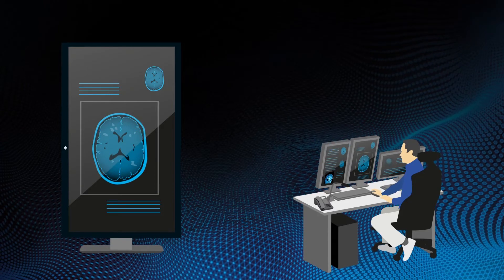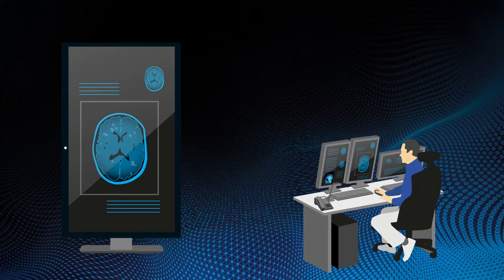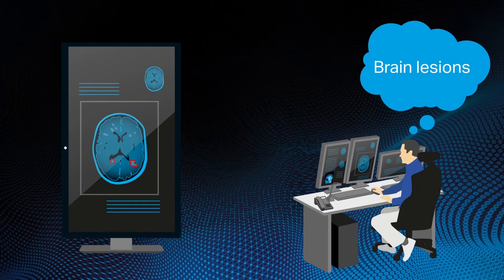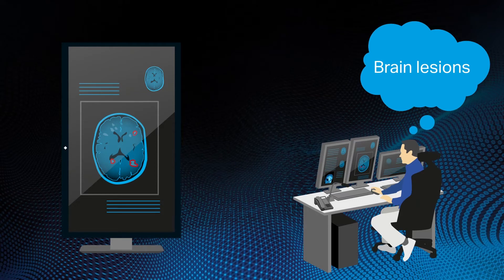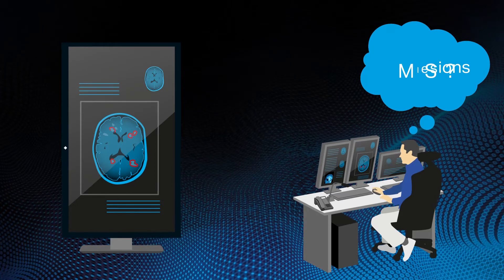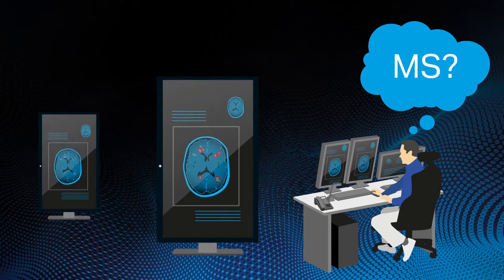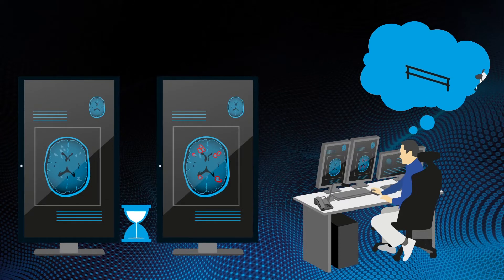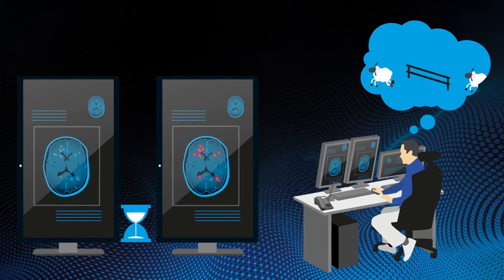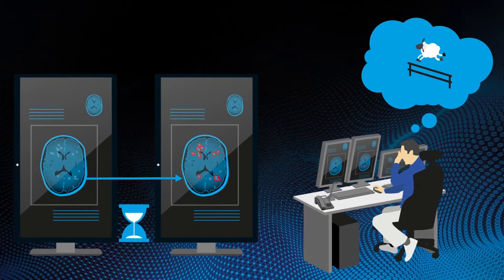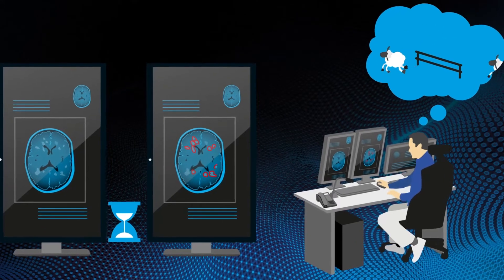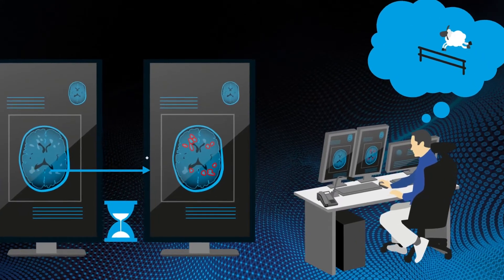Issues also arise regarding the number, volume, and dynamics of brain lesions — factors that are important for characterizing diseases like multiple sclerosis. Their precise quantification, especially when compared to prior scans, is not only time-consuming, but can be quite a boring task.